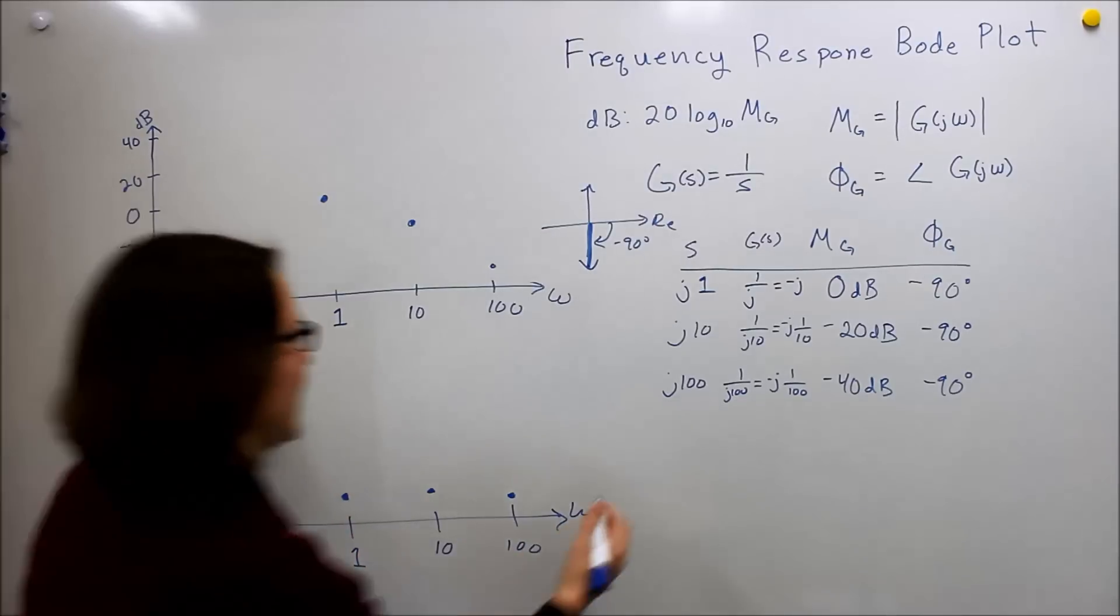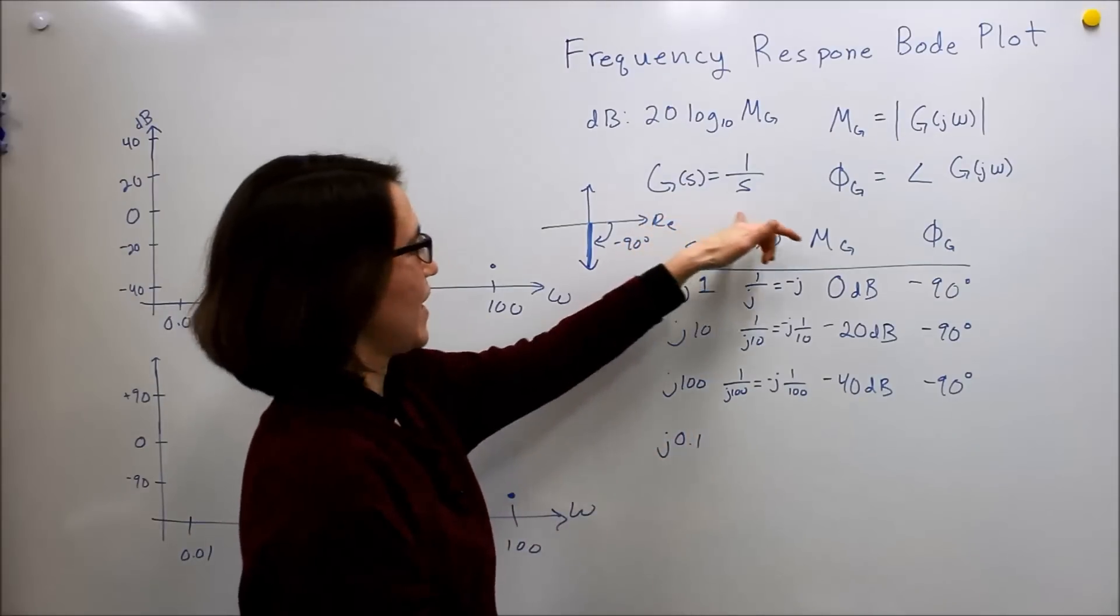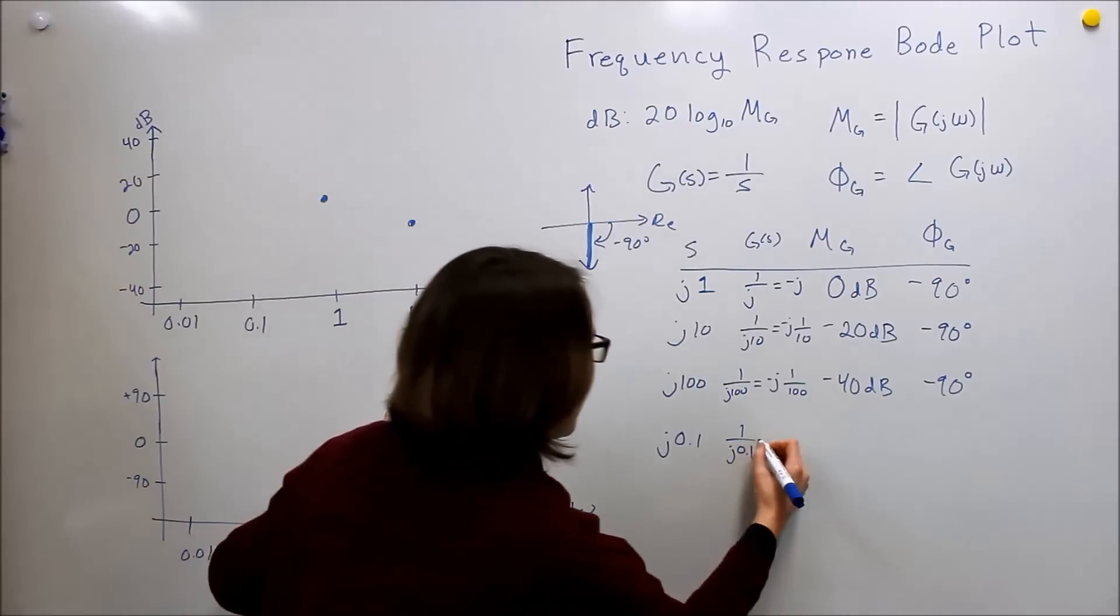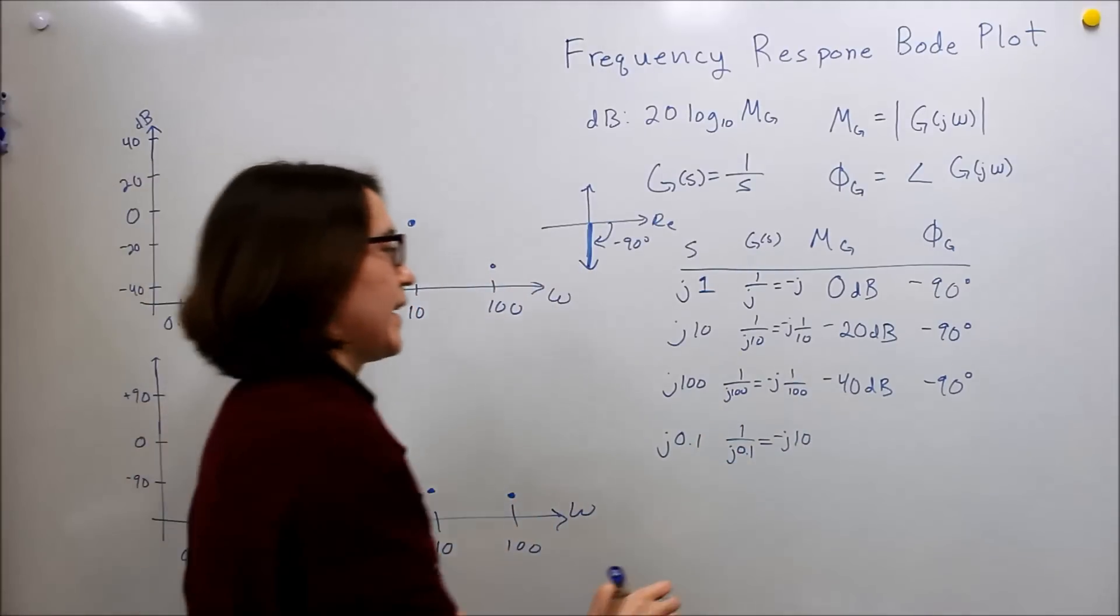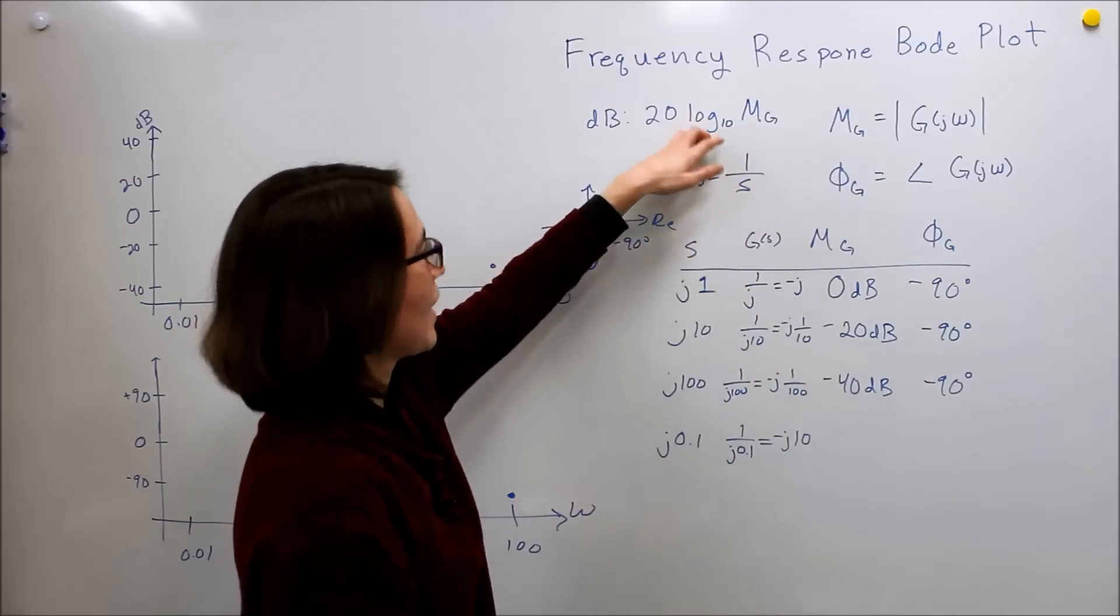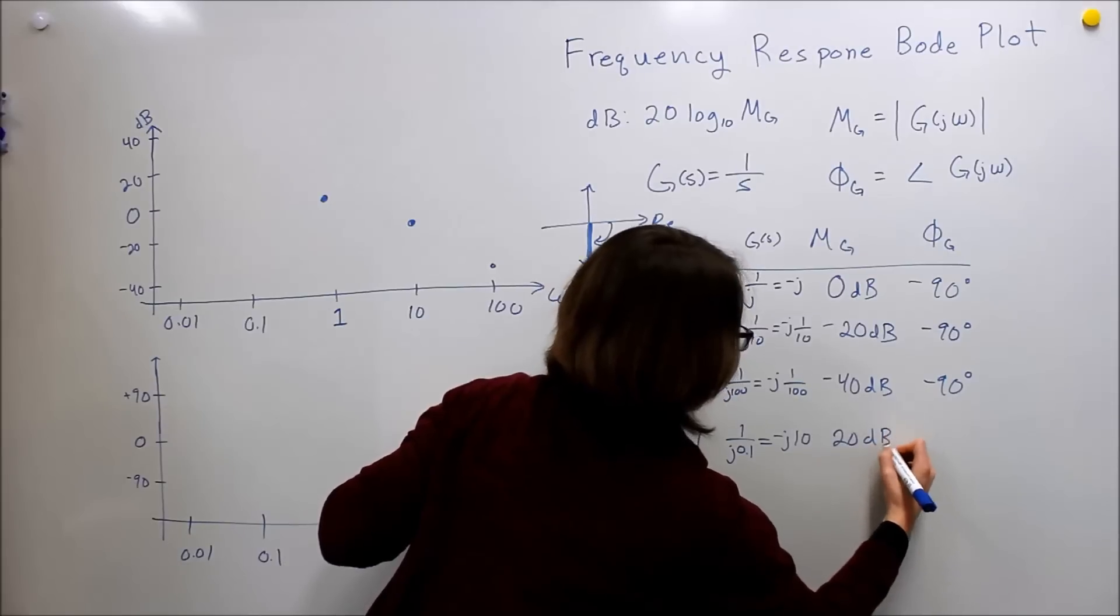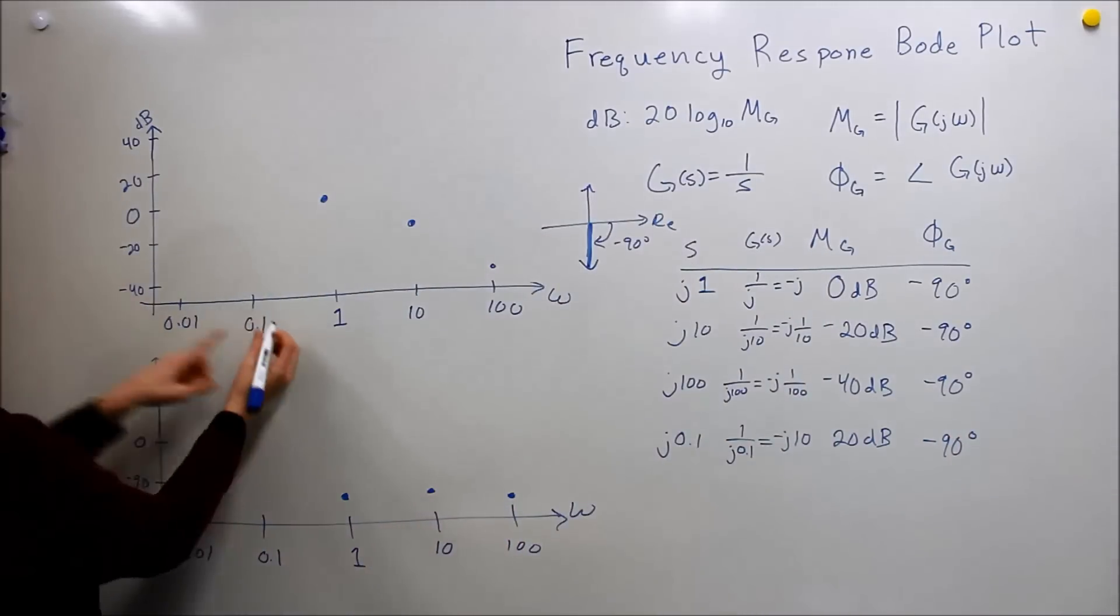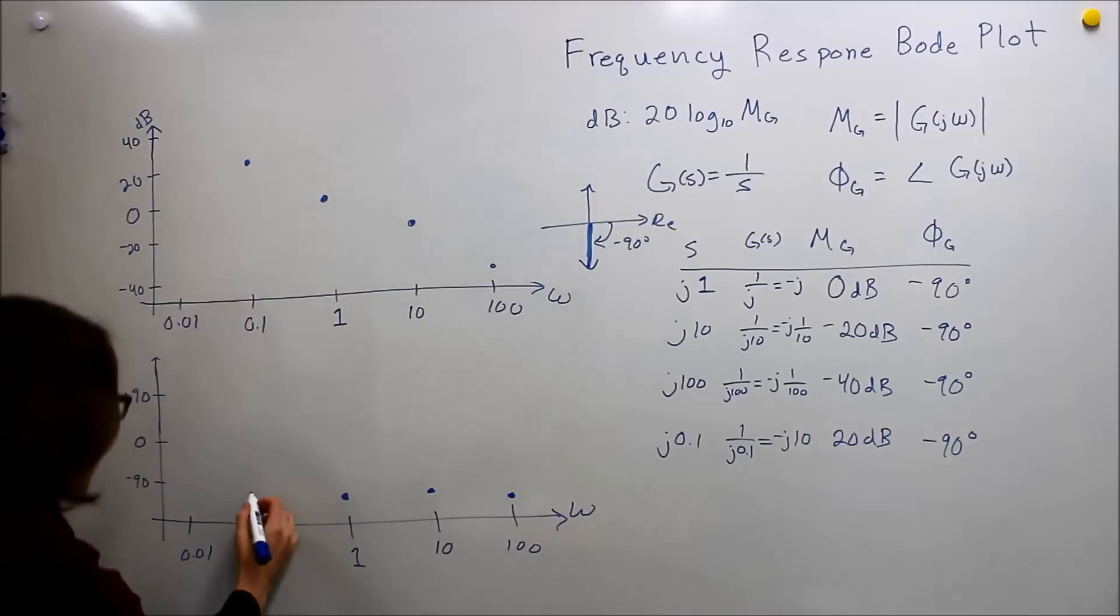So we'll do one more point. So J0.1. And that's, we'll put that into our G of S. So 1 over J0.1. And this time, we move everything around. We've got negative J10, because 1 over 0.1. And when we put that into our log equation, this time we're going to get log of 10 is 1 times 20 is 20 dB. And again, angle, still negative 90. So here's 0.1. Here we are. Somewhere in here. And negative 90.